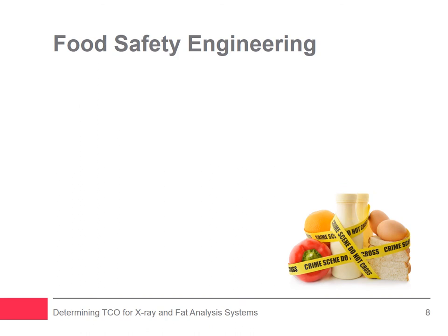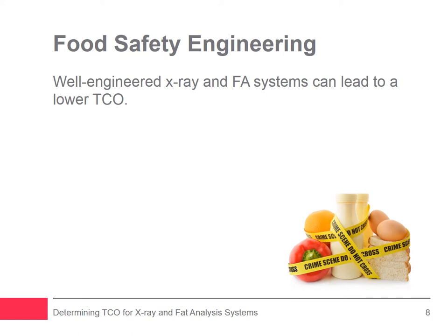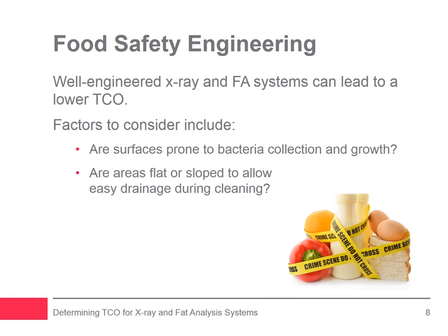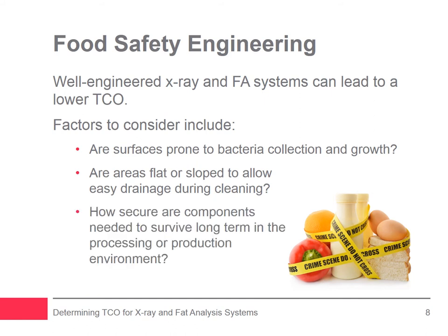The third variable is whether the machine is engineered for food safety. To prevent microbiological contamination, processors must take special care in reviewing how equipment has been engineered and if it's consistent with their overall food safety strategy. Factors to consider include: Are surfaces prone to bacterial collection and growth? Are areas flat or sloped in such a way to allow easy drainage during cleaning? How secure are the components needed to survive long-term in the processing or production environment?